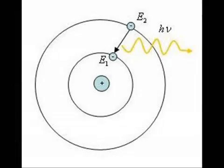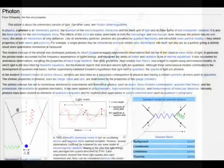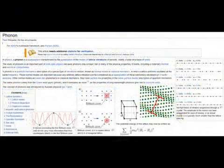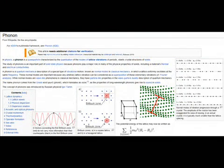When an atom drops energy states, that energy is released in the form of a light wave, photon, or a lattice vibration, phonon, which is kind of like a sound wave.